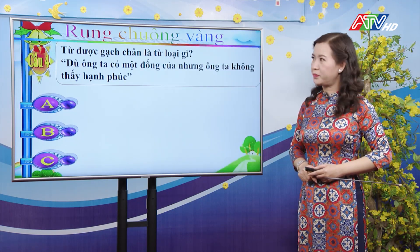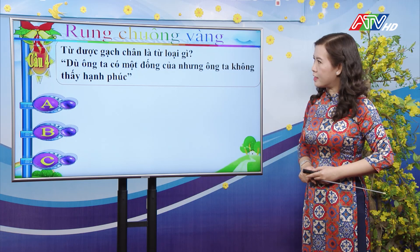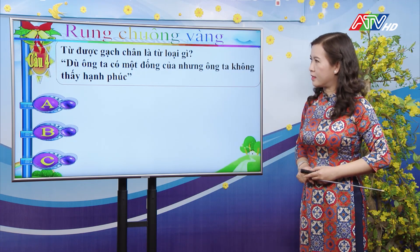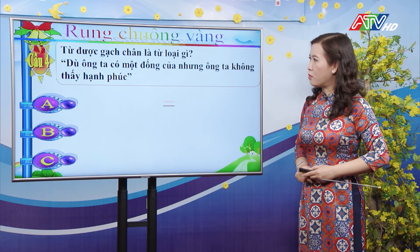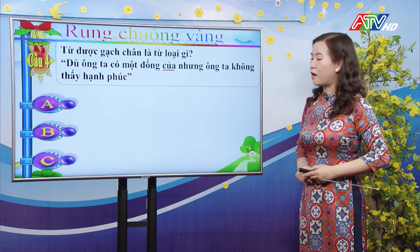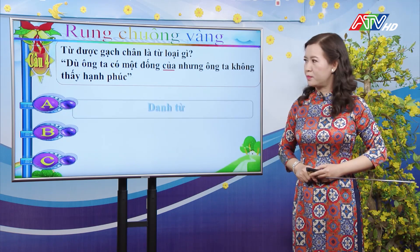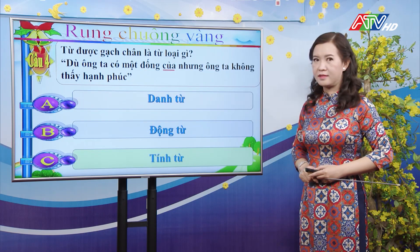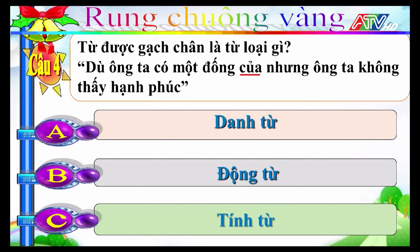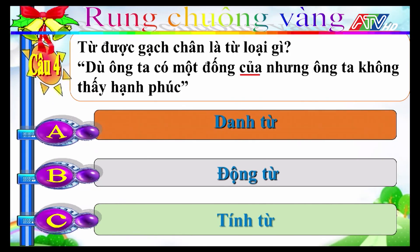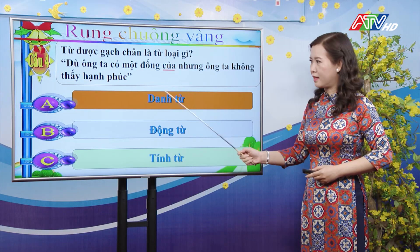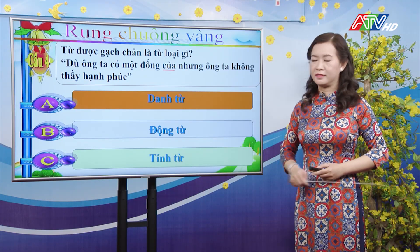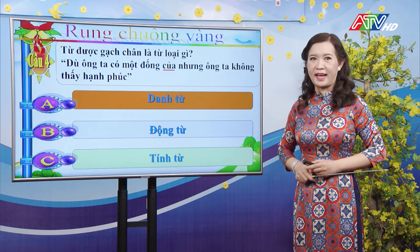Câu 4: Từ được gạch chân là từ loại gì? "Dù ông ta có một đống của nhưng ông ta không thấy hạnh phúc." A-danh từ, B-động từ, C-tính từ. Đáp án đúng là A: từ "của" trong câu này là danh từ — "của" ở đây có nghĩa là của cải.